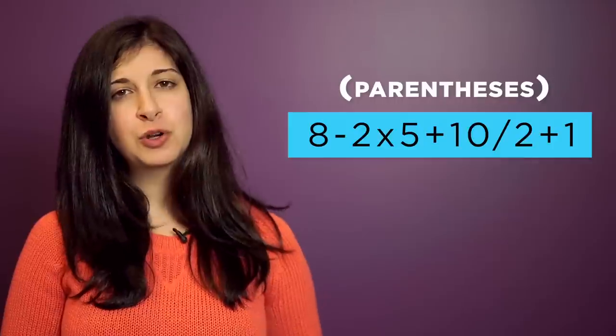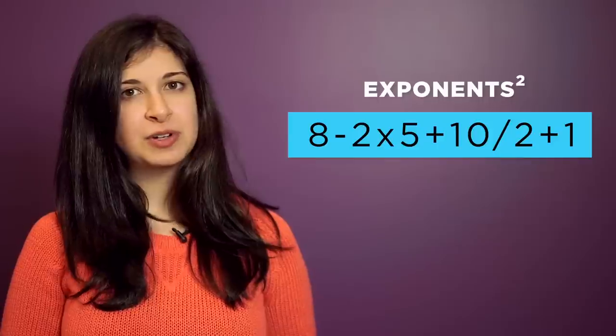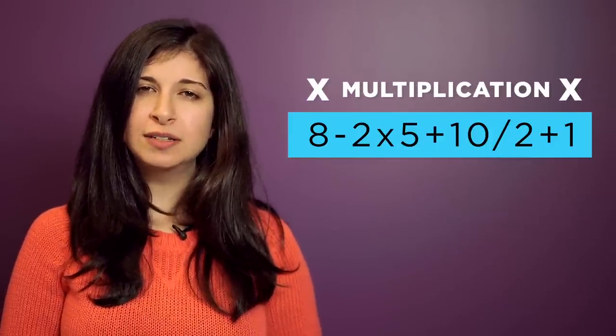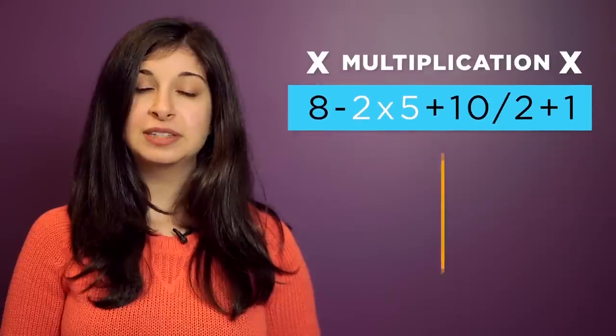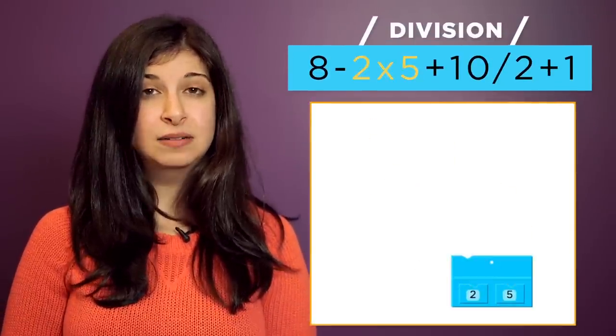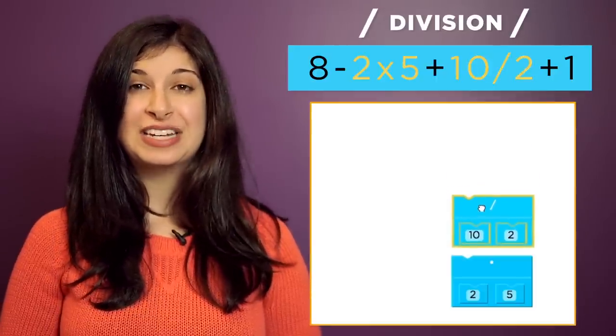P, there are no parentheses, so let's move on. E, no exponents either. Next, multiplication. M. Okay, so we have some multiplication. Let's make a block for the 2 times 5. D, there's also some division too. Let's make a block for 10 divided by 2.